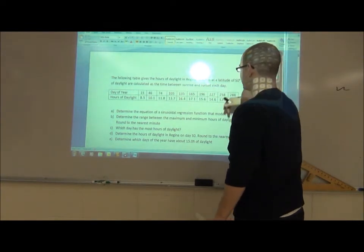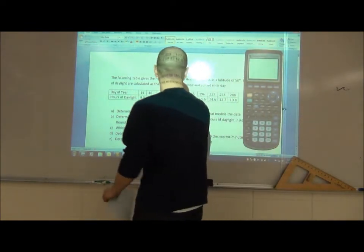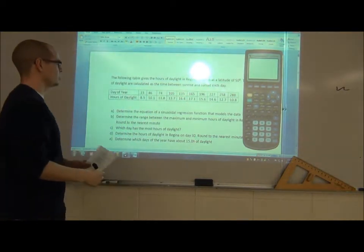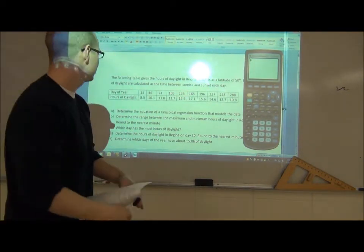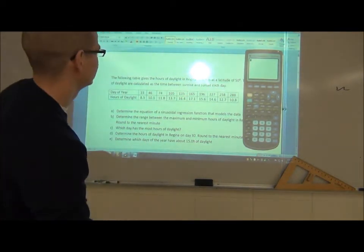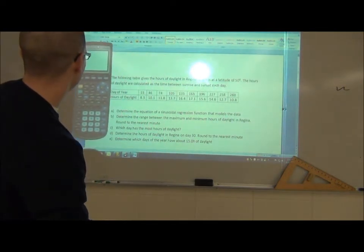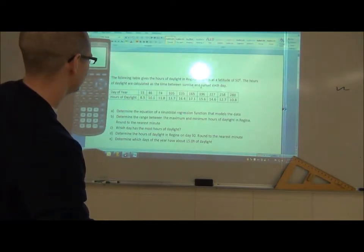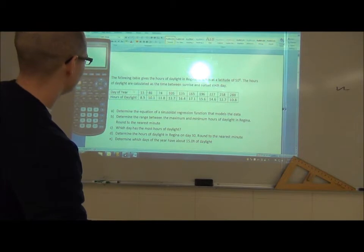It depends. Here we're given a table. Sometimes I'll be given an equation. It says that this table gives you the hours of daylight in Regina. The hours of daylight are calculated as the time between sunrise and sunset each day. So we've got the day of the year and the hours of daylight.